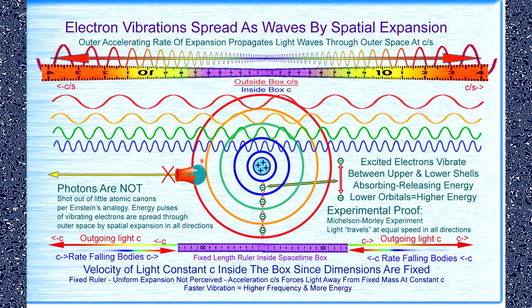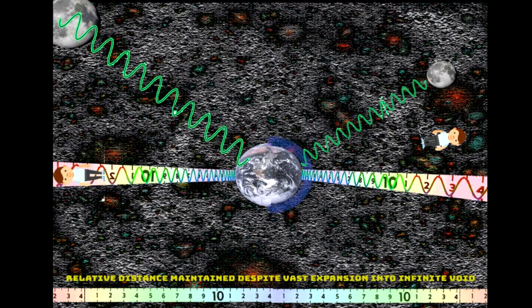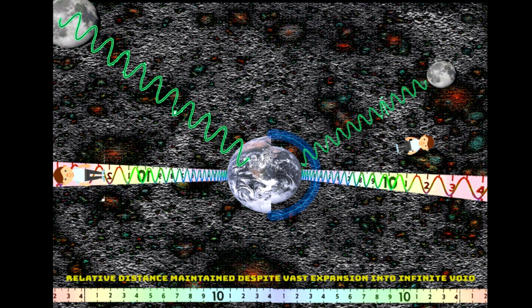Inside the box, the surface of Earth appears fixed while stationary objects appear instead to be free-falling. Outside the box, the expanding Earth overtakes the stationary falling man as light waves propagated by Earth expansion are manifested as progressively increasing blue shift towards Earth or red shift away from it. Gravitational expansion is perceived as ordinary Doppler frequency shift — that is gravitational red shift in reality.